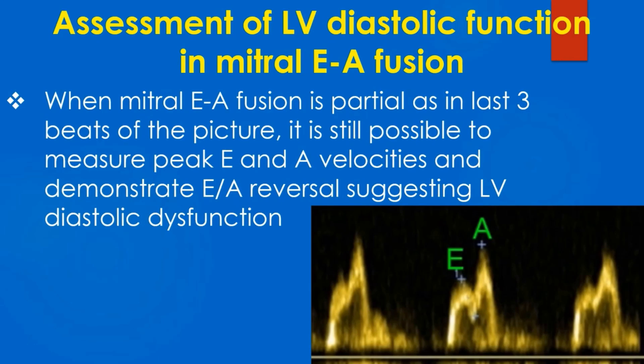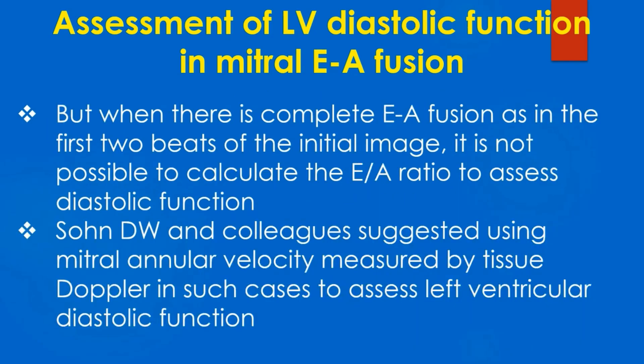When the mitral EA fusion is partial, as in the last 3 beats of the picture, it is still possible to measure peak E and A velocities and demonstrate E by A reversal, suggesting left ventricular diastolic dysfunction. But when there is complete EA fusion, as in the first 2 beats of the initial image, it is not possible to calculate the E/A ratio to assess diastolic function.